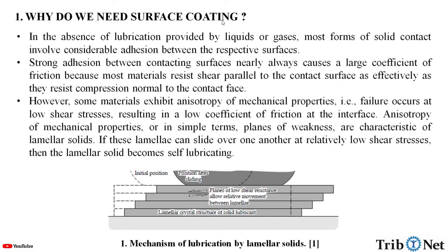Why do we need surface coating? In the absence of lubrication provided by liquids or gases, most forms of solid contact involve considerable adhesion between the respective surfaces. Strong adhesion between contacting surfaces nearly always causes a large coefficient of friction, because most materials resist shear parallel to the contact surface as effectively as they resist compression normal to the contact face. However, some materials exhibit anisotropy of mechanical properties — that is, failure occurs at low shear stresses, resulting in a low coefficient of friction at the interface. Planes of weakness are characteristic of lamellar solids. If these lamellae can slide over one another at relatively low shear stresses, then the lamellar solid becomes self-lubricating. Hence, if there is no liquid or gas for lubrication, then we need solid lubrication and therefore we need surface coating.